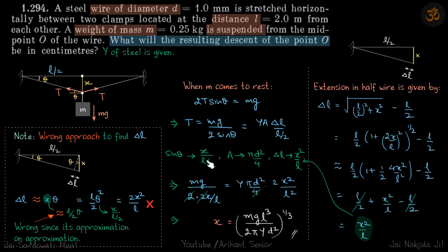We're going to use approximations. Sin theta will be X upon L by 2. The cross-sectional area of this wire will be pi D square by 4. And delta L we don't know, so we need to calculate it.